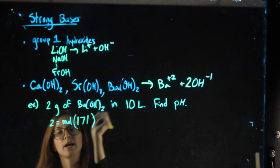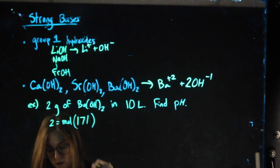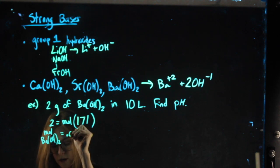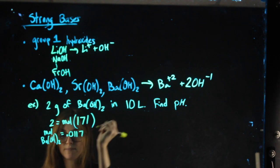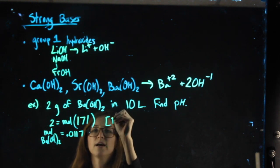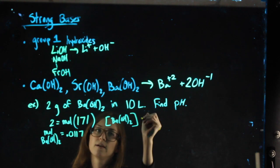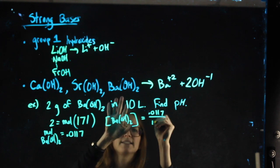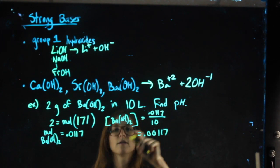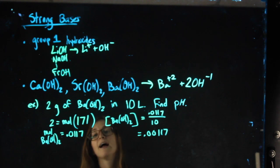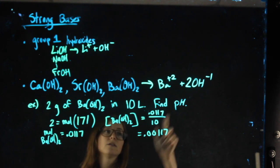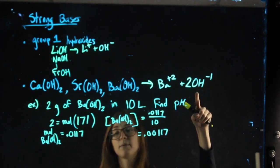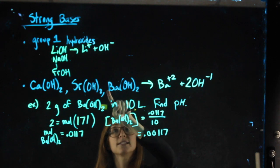So what I just found are my moles of barium hydroxide, which is 0.0117. I can find my molarity of barium hydroxide, brackets mean molarity, by taking my moles divided by my 10 liters. That's my barium hydroxide concentration. It is not equal to my hydrogen concentration because hydrogen's not even in here. And it's not equal to my hydroxide because this has a 1 and that has a 2.